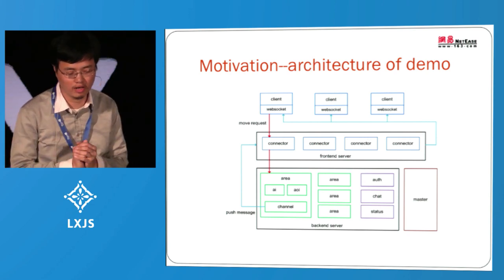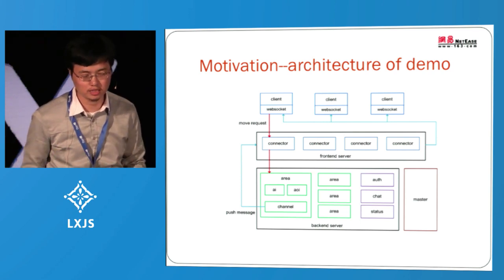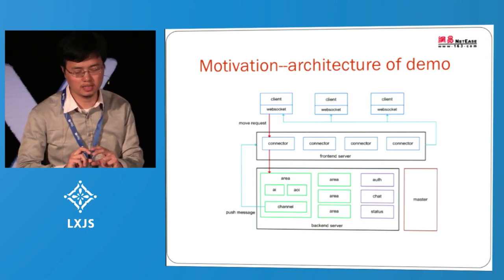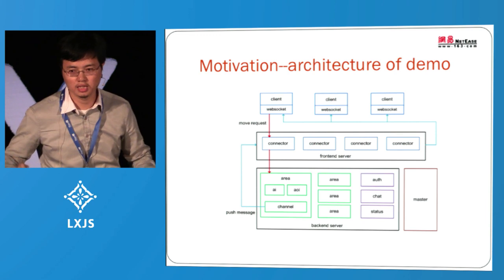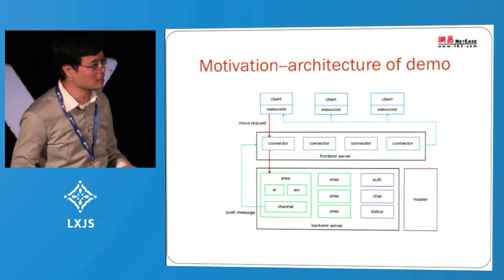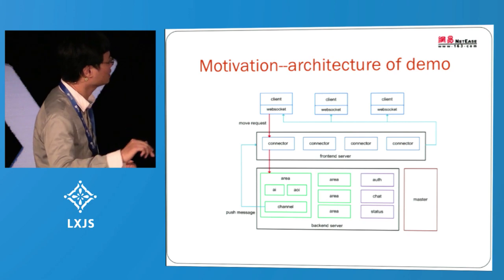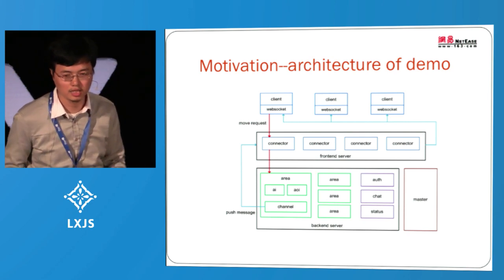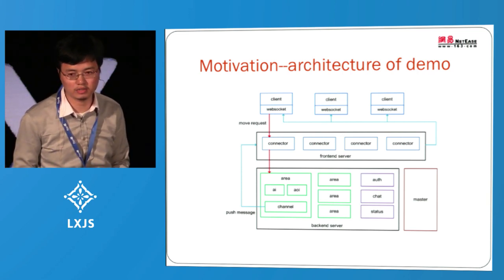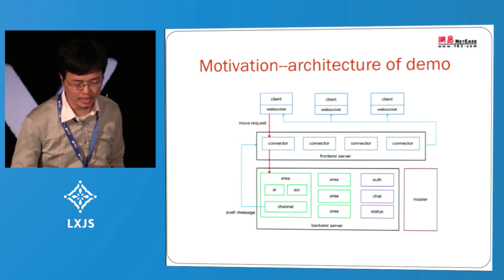This is the runtime architecture of our demo. Each rectangle represents a process. In the front end, there is a group of servers called connectors, which do not do real business logic — they just hold long connections and forward business logic to the back end. The area server is where the real business logic is done. It forwards back to the connector, and the connector pushes messages to the client. In an actual game, there are more than 10 types of servers — it is quite a complicated architecture.